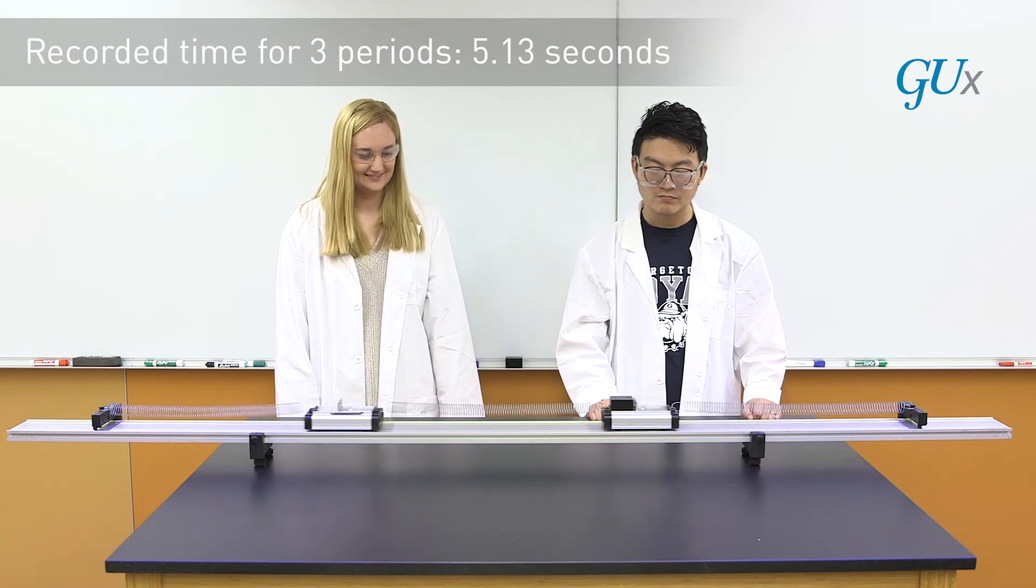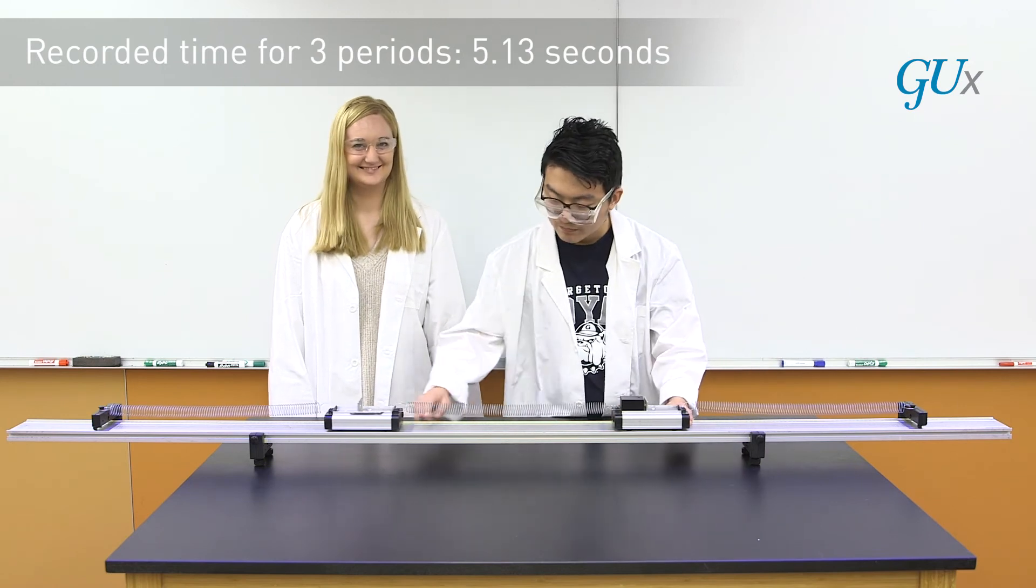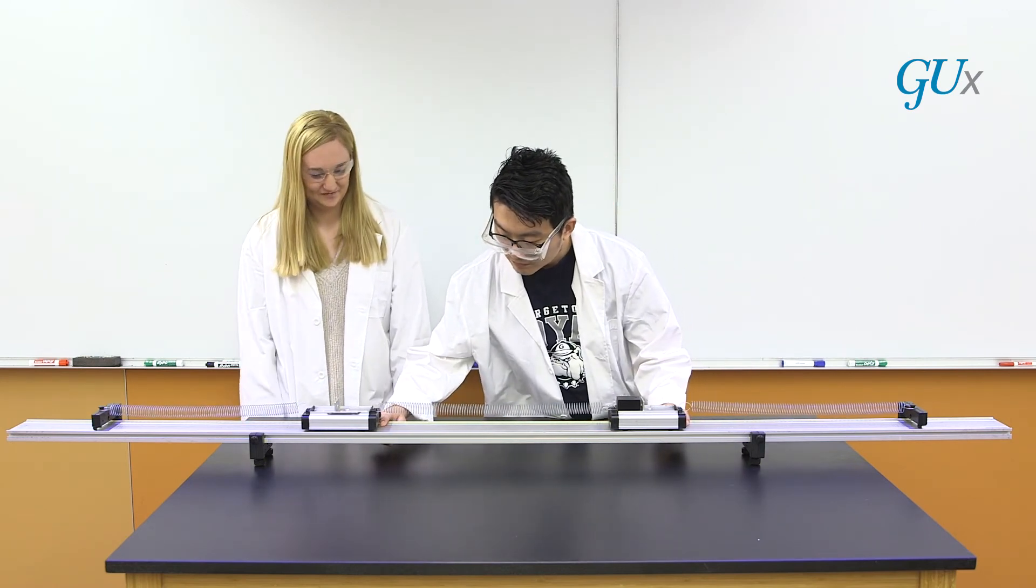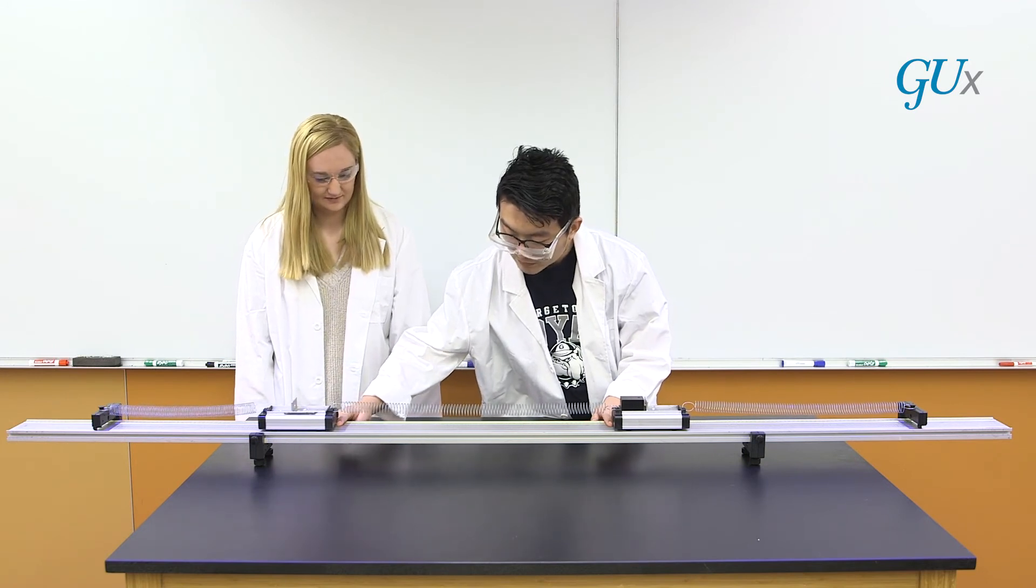To give you an idea of what happens when you really have beats and it's a little bit harder to tell the difference when you have the heavy mass, we're going to just displace one of them, leaving the other one fixed, and we'll see what happens in this case.